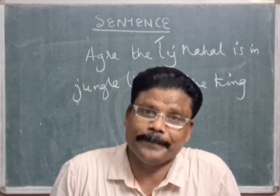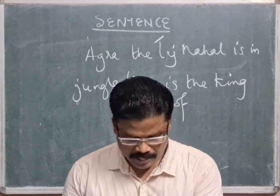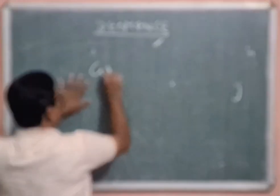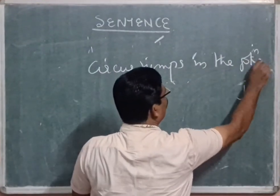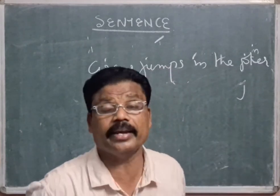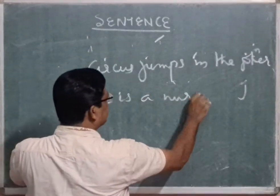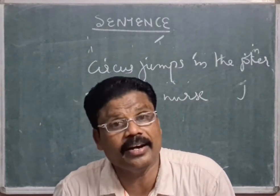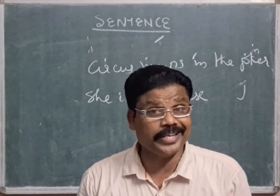Now let's do exercise number one. 'Circus jumps in the joker' — does it make a complete sense? No, it does not make a complete sense, so it is not a sentence. 'She is a good nurse' — does it have a complete meaning? Yes. So that is a sentence.